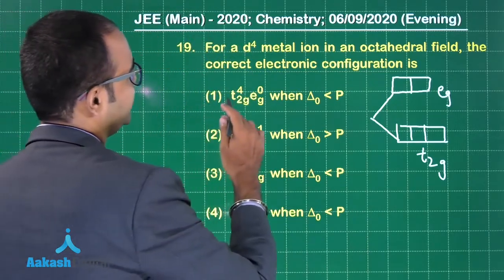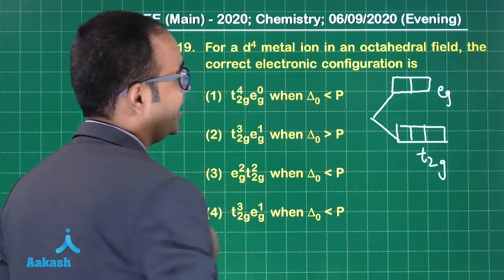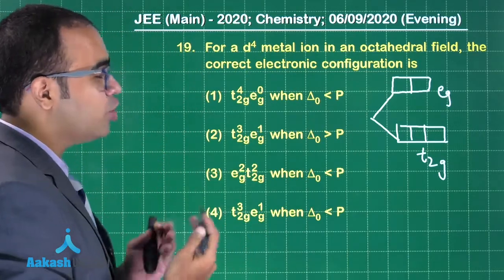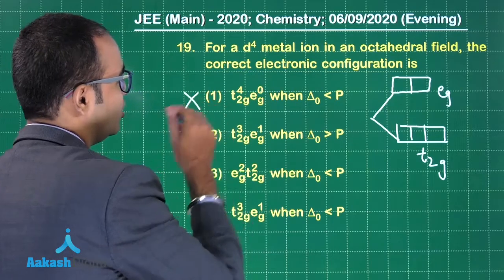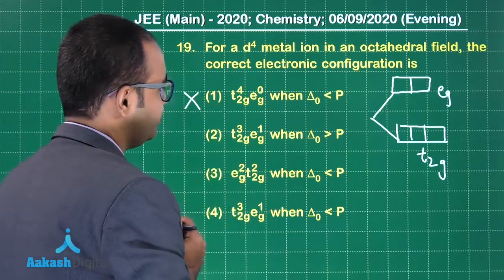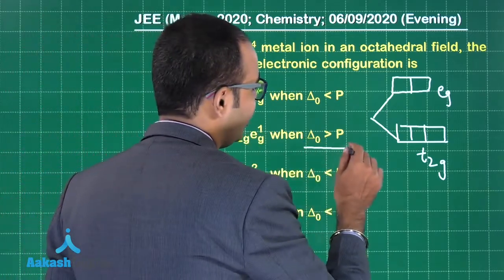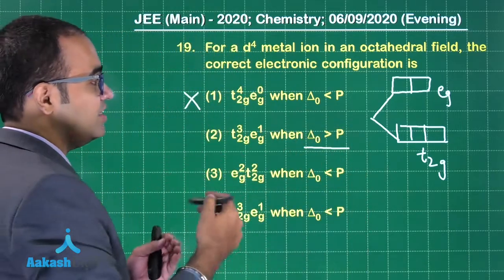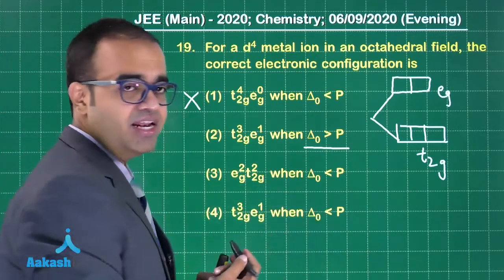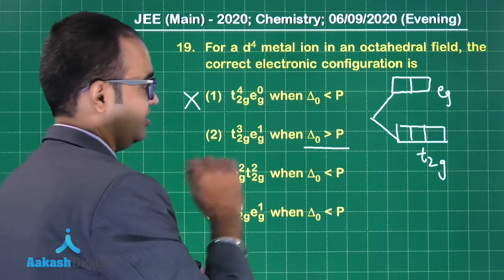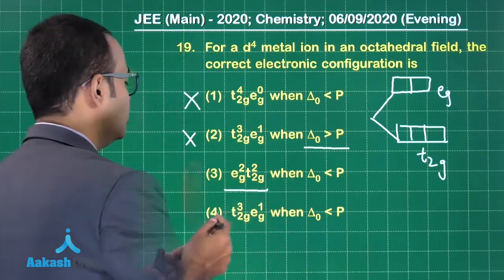Option 1: t2g has four electrons with Δo less than pairing energy — but if Δo is less than pairing energy, the electron would jump from t2g to eg, so option 1 is wrong. Option 2: t2g has three electrons and eg has one, but Δo is greater than pairing energy — if Δo is greater than pairing energy, all electrons would pair up in t2g, so this is also wrong. Option 3 is also wrong.